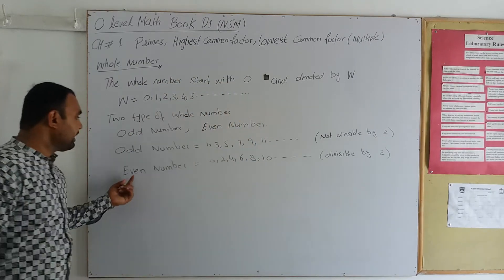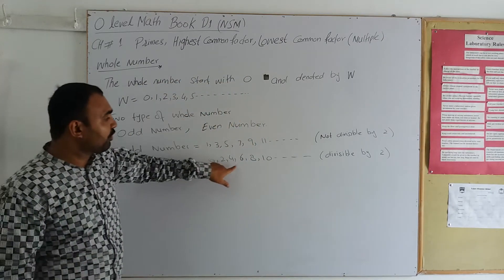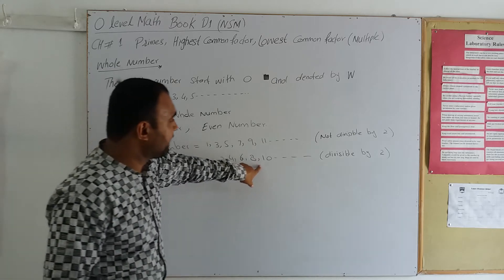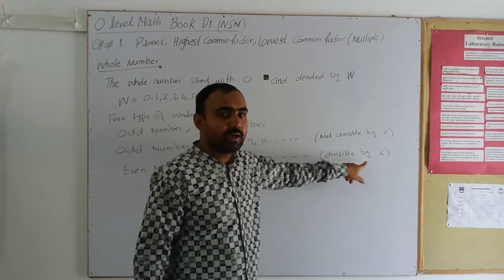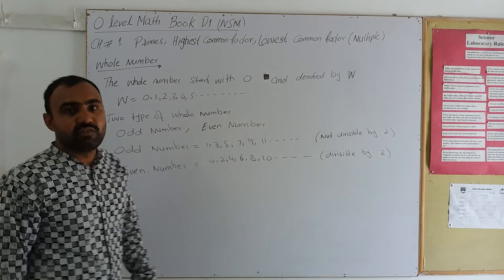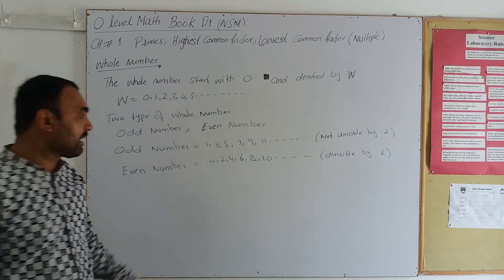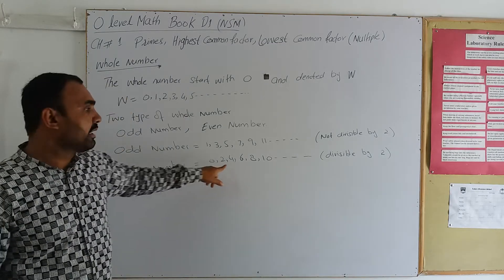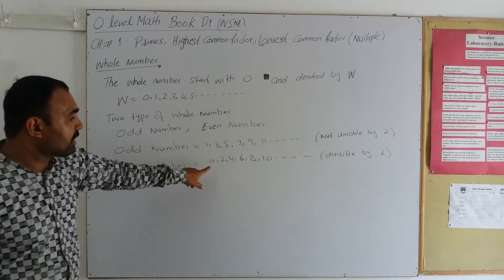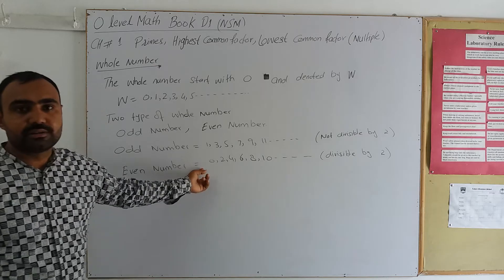Similarly, even numbers are 0, 2, 4, 6, 8, 10, denoted by 2. The number divisible by 2 is called an even number. Also, 0 is also an even number.